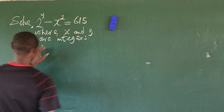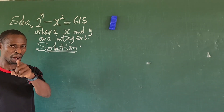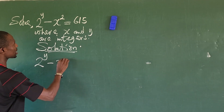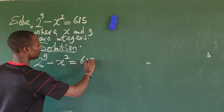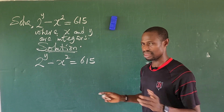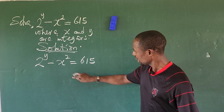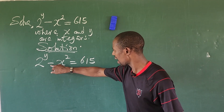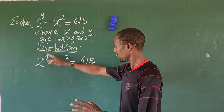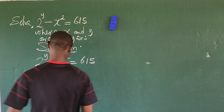The first thing we're going to do is take our solution to this challenge — mind you, it's not a problem but a challenge. The question is 2 to the power of y minus x squared equals 615. What comes to mind is the application of the difference of two squares, because we have x squared and a minus sign. We need to manipulate the other side to bring 2 to the power of 2.